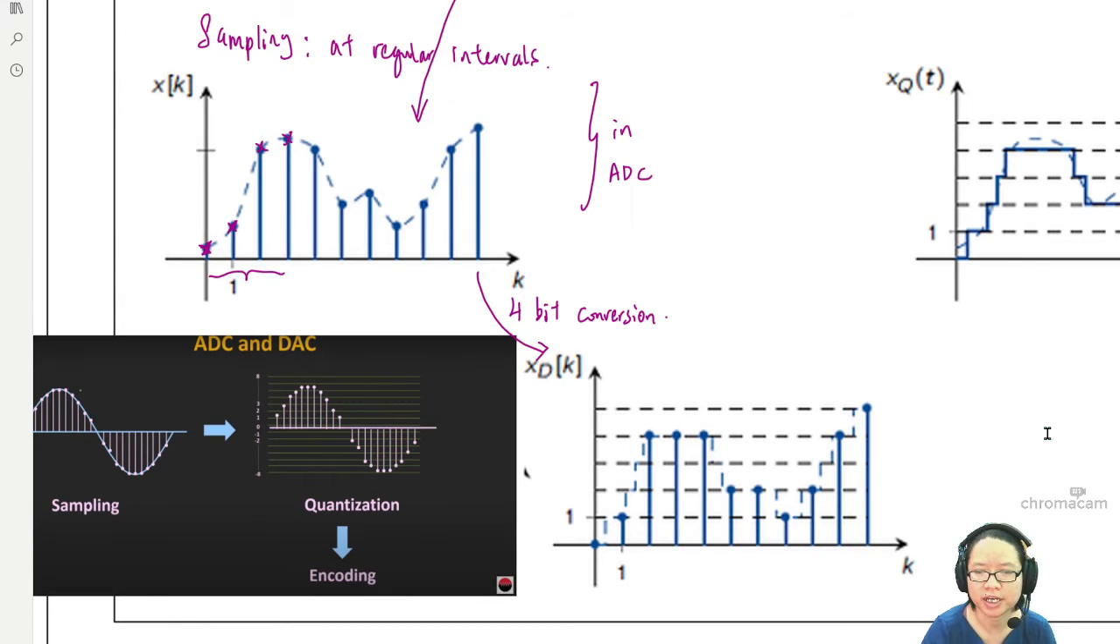Both of this happens inside the ADC, analog to digital converter. Once we have this reading, we will convert this. When they say encoding, it also means convert it to binary number. Binary number is a series of ones and zeros. It depends on what number you get, and because we follow a four bit conversion, what we will tend to get is numbers between zero to 15.